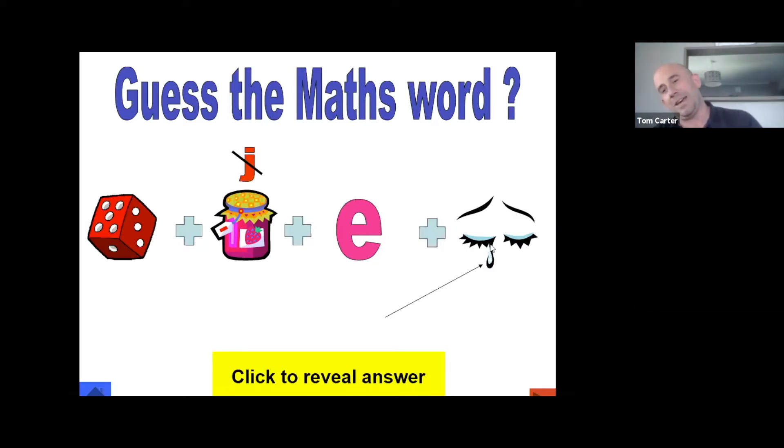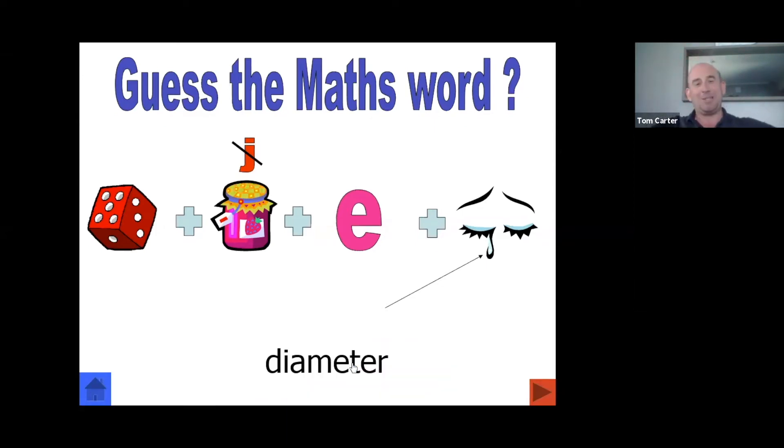All right, on the end there, it's meant to be a tear. In case you think it's someone with a bit of a small wonky nose. Any more guesses? Put that in the chat, would you? Die-am-eter. So die, and then the am is the jam without the J, E, and then tear. Tear, get it?